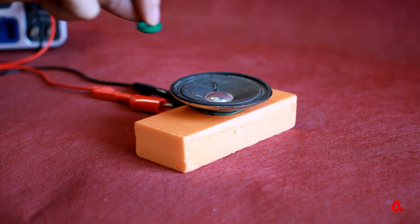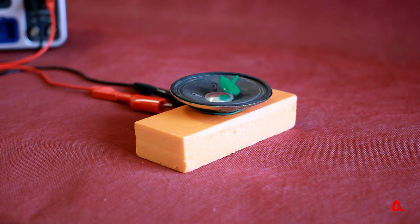To make the movement of the membrane visible, we put a plastic chip on it. See how it's bobbing up and down.